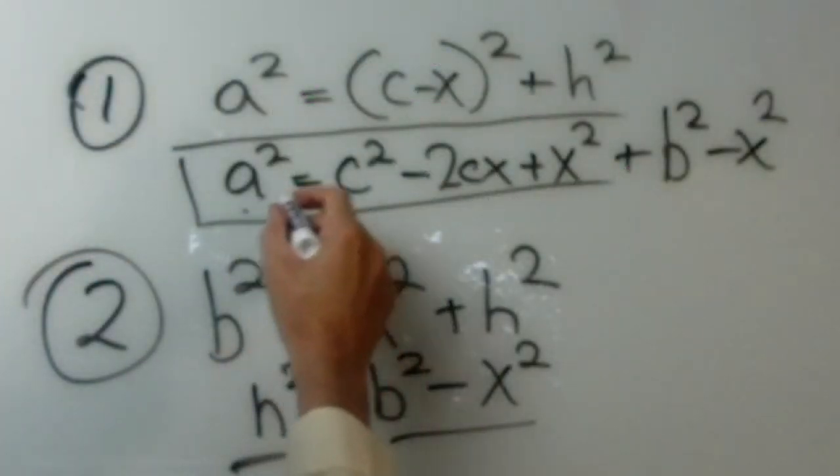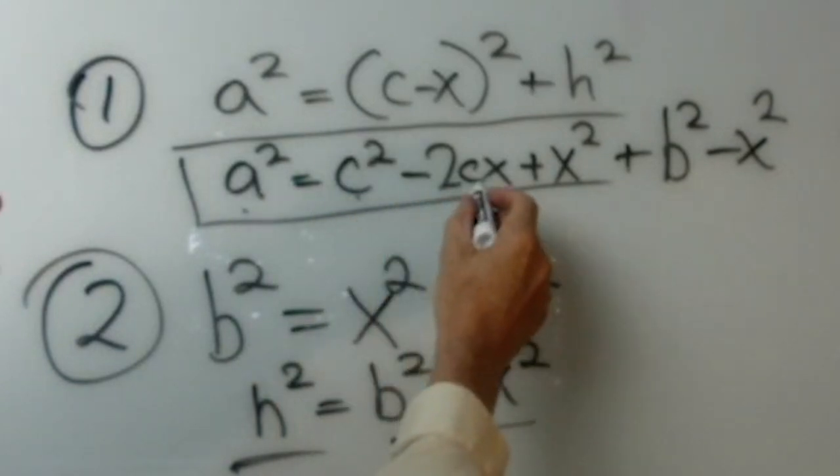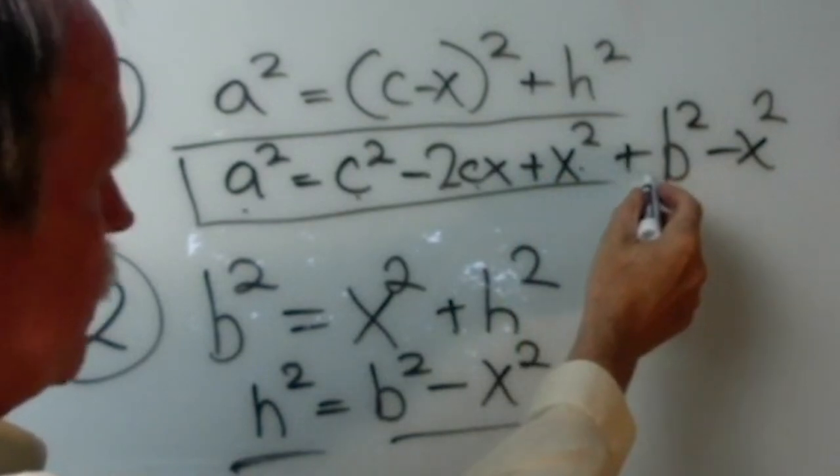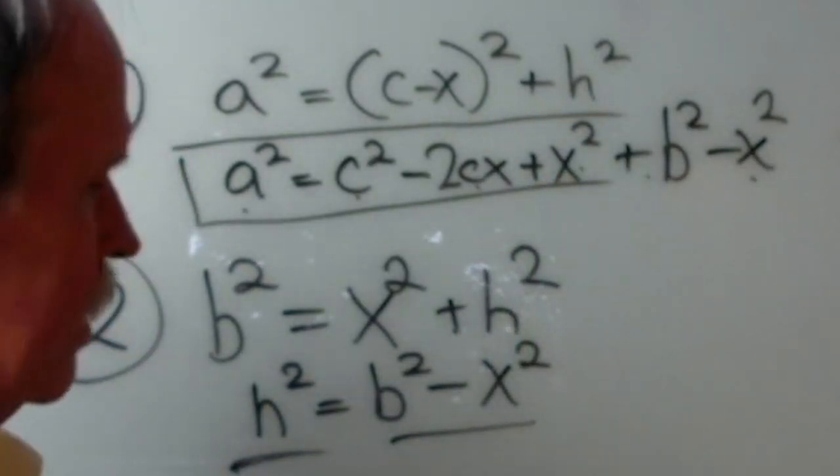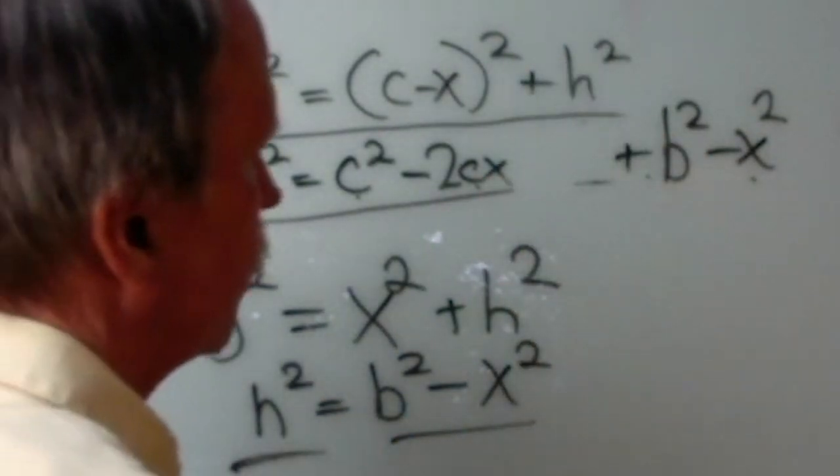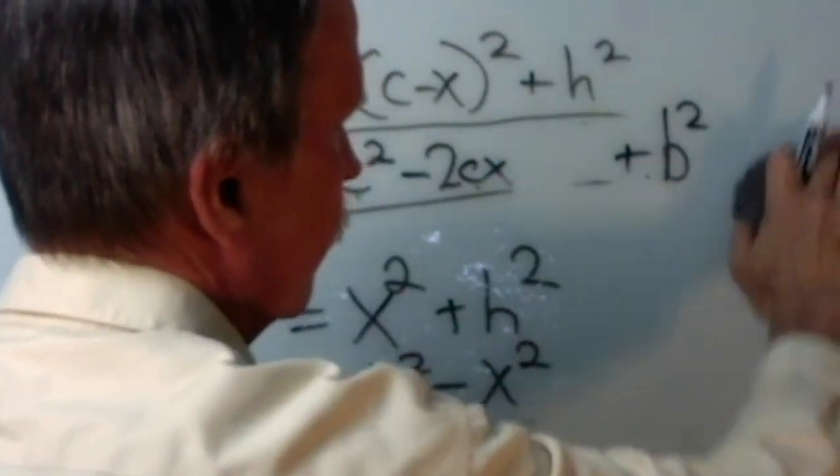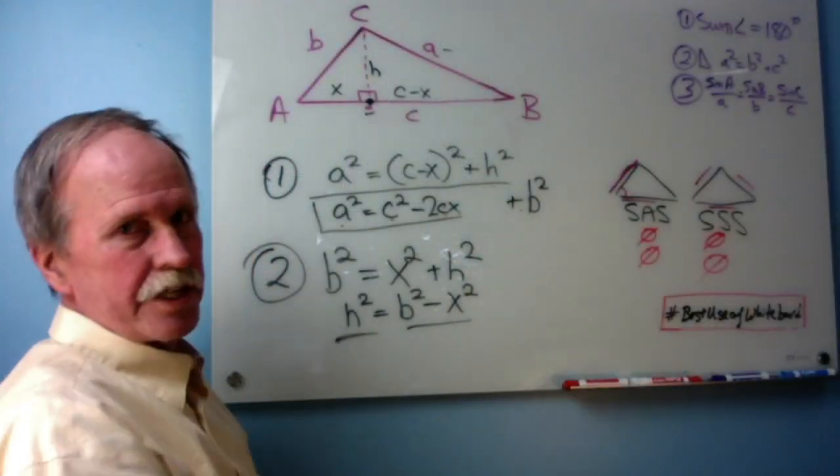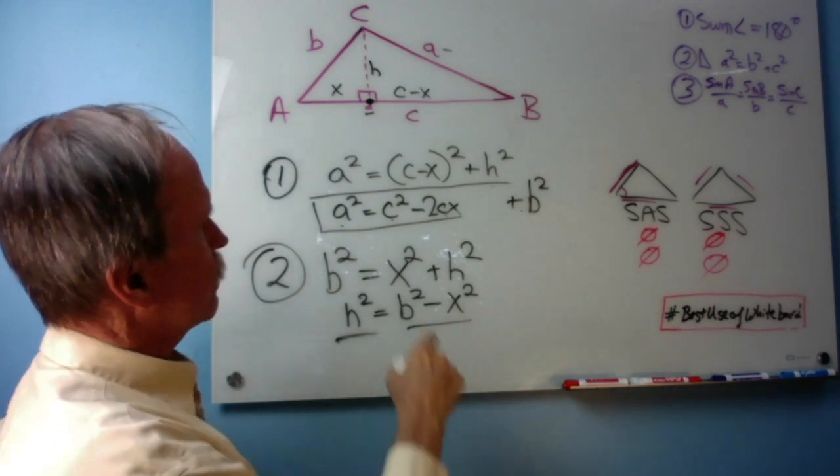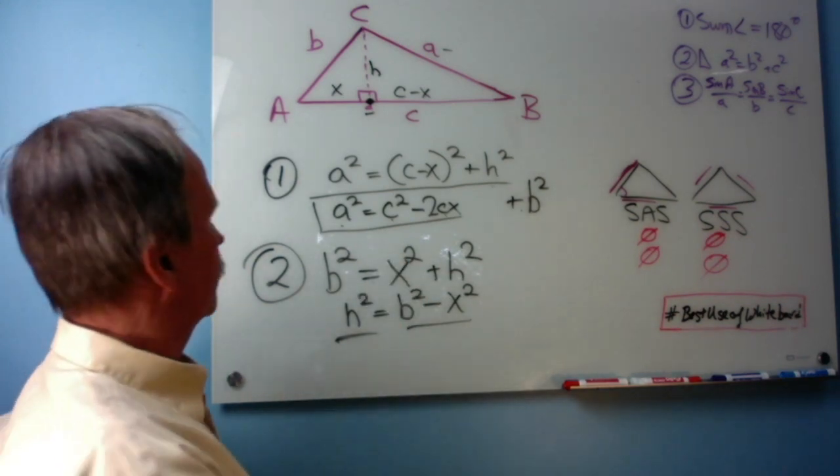So, we have A squared equals C squared minus 2CX plus X squared plus B squared minus X squared. I'm thinking we can get rid of these right here, can't we? We've got plus X squared and minus X squared. We don't need that. So, let's rewrite this in a little different order.